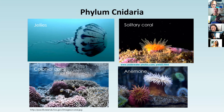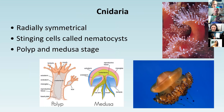Next up we have Cnidaria - these are your corals, anemones, and jellies. All cnidarians are radially symmetrical and they all possess stinging cells called nematocysts - little harpoon-like structures. Even anemones have stinging cells; they're just not as strong as a jelly's, so they feel a little sticky if you touch one in a touch tank. All cnidarians have nematocysts and they all have both a polyp and medusa stage.